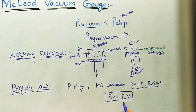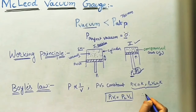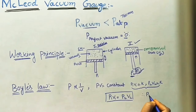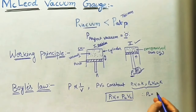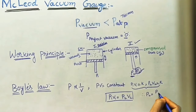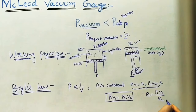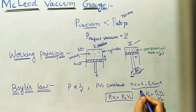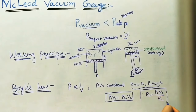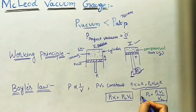We need to find P2 by using this. Therefore, P2 is equal to P1V1 divided by V2. This is the main working principle of this gauge.